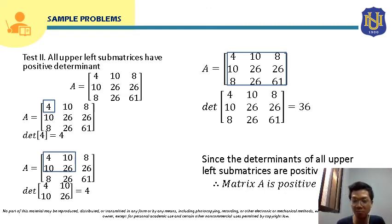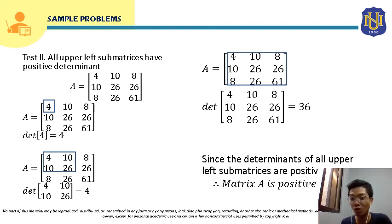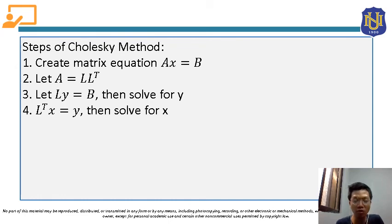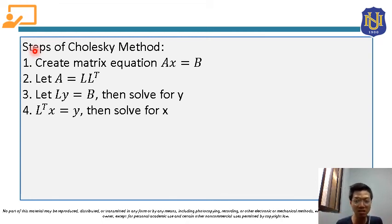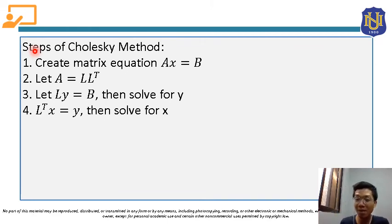We don't need to show both solutions in quizzes, but in the CM assessment task you should show both tests to practice. Now we proceed to the steps of Cholesky method, which we can only use once the matrix is confirmed symmetric and positive definite. Step 1: create the matrix equation AX = B. Step 2: decompose matrix A into product L·Lᵀ. Step 3: use LY = B to solve for Y. Step 4: use LᵀX = Y to solve for X.